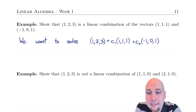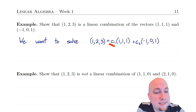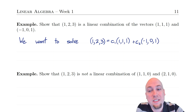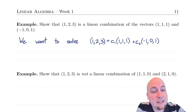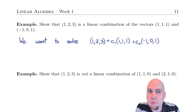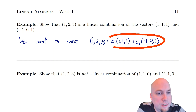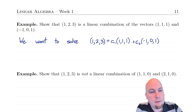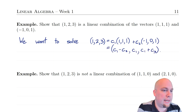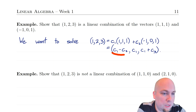Mathematically, I'm asking: do there exist scalars c1 and c2 such that c1 times [1,1,1] plus c2 times [-1,0,1] equals [1,2,3]? To answer this, I'm going to expand out this linear combination — do the scalar multiplications and the vector addition. When I do that, what I get on the right-hand side is the vector [c1 minus c2, c1, c1 plus c2].